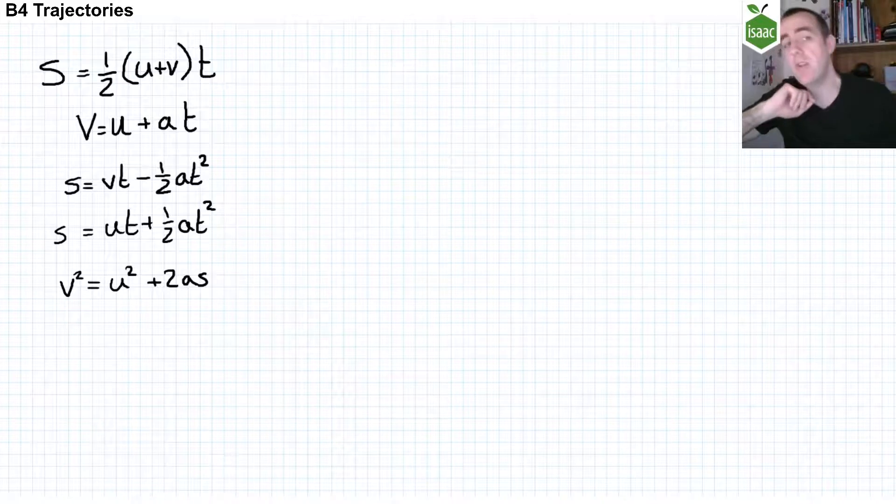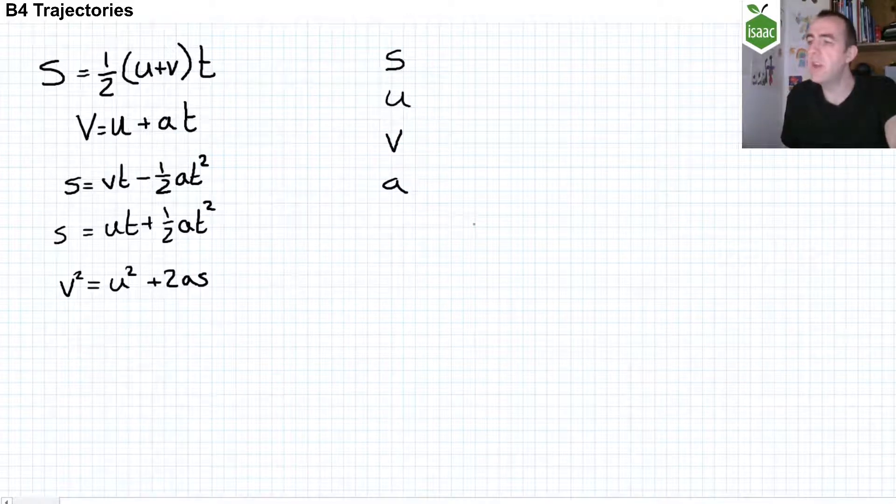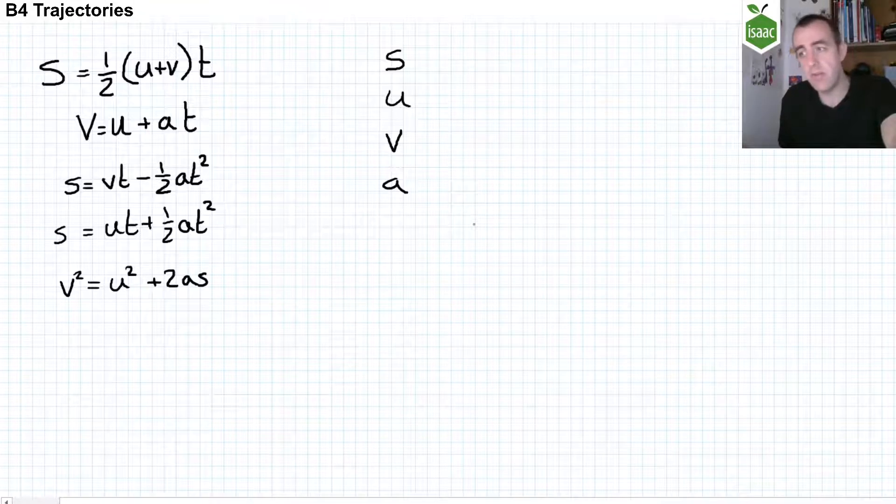You may have noticed that four of the five variables in these equations are vectors. They are the displacement, the initial velocity, the final velocity, and the acceleration of the body.